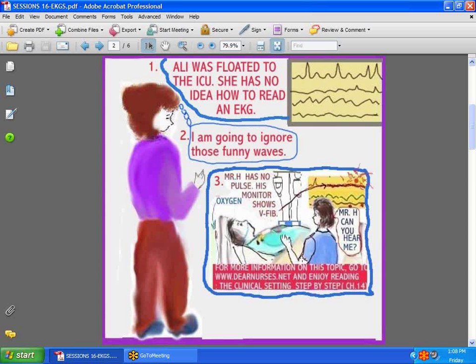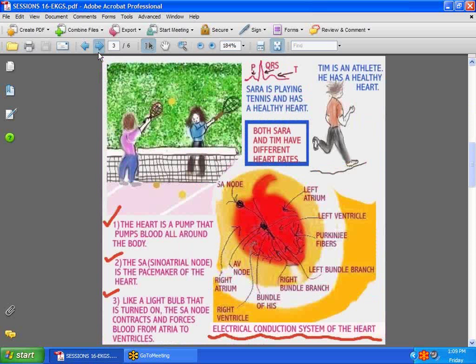So we are going to take a look at the conduction system of the heart to understand what happens when we look at an EKG. Now the heart is a pump, we already know that, and what triggers the whole system of this conduction system, which is like when the light bulb goes on, is the sinoatrial node. The sinoatrial node is located in the right atrium.